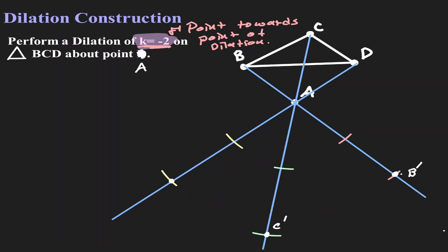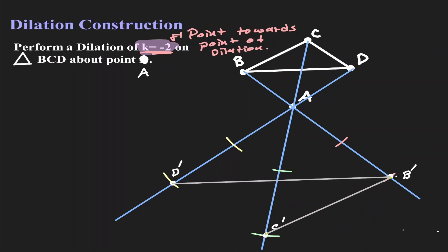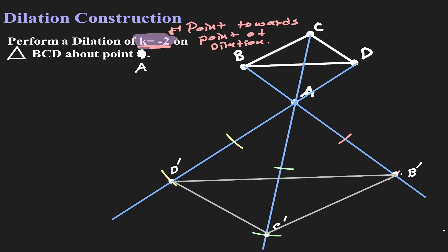Let's do the same for D. This location is where we are going to find D'. Now let's create our new triangle. This new triangle is the result of dilating triangle BCD over point A with a scale factor of negative 2.